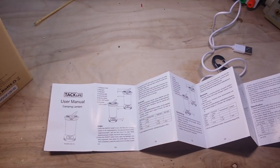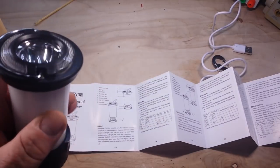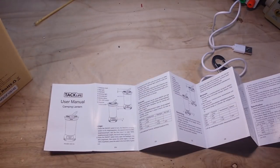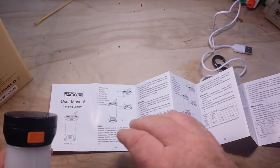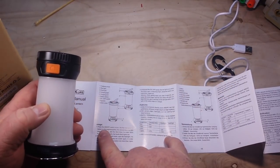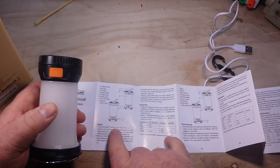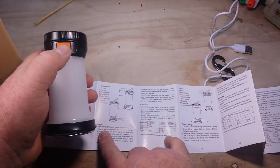Magnetic bottom cover, does that mean it'll stick to something? Not that I'm aware of. Let me try something. Yeah, no. Okay, press the on-off switch the first time, the camping lantern is at five percent brightness.